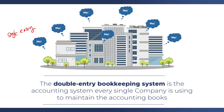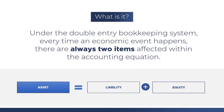For the double entry bookkeeping system, it's interesting because this system has been present ever since it was published by Father Luca Pacioli and has seen just some slight modifications. It works so well that no one is actually attempting to change it. Under the double entry bookkeeping system, every time an economic event happens, there are always two items affected within the accounting equation.